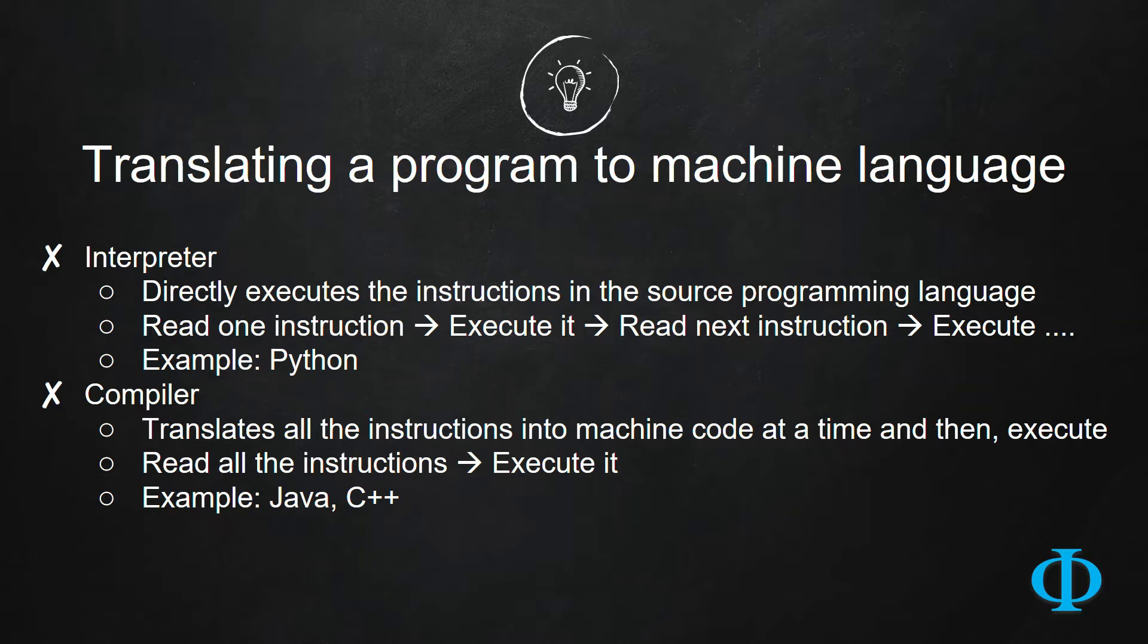Now this translation can happen in two different ways. Number one is called interpretation. Here, the translator software reads one instruction and then executes it, then it moves to read the next instruction and then executes it.